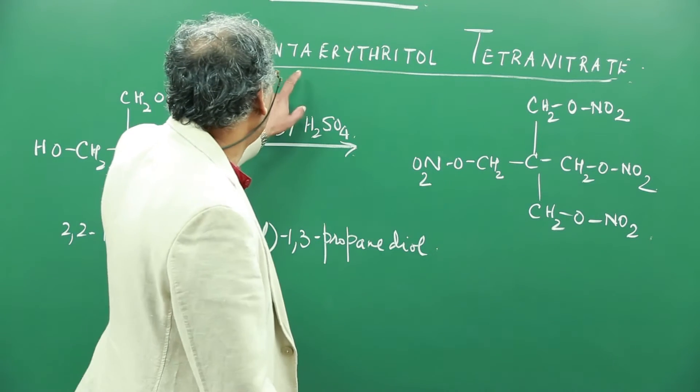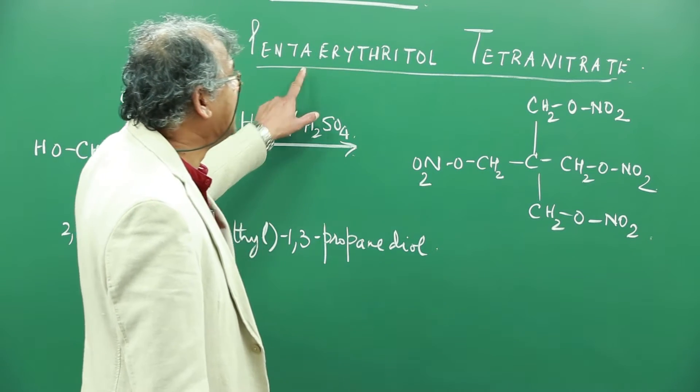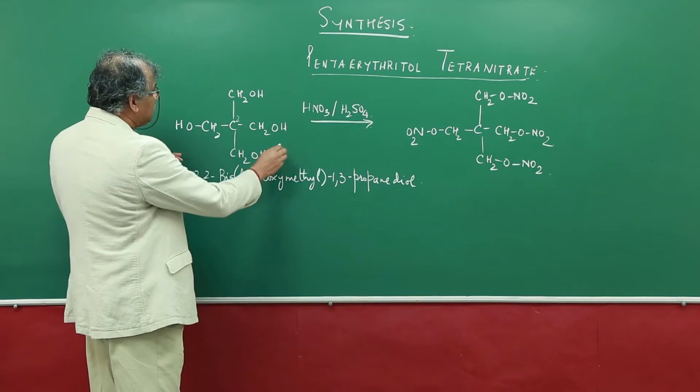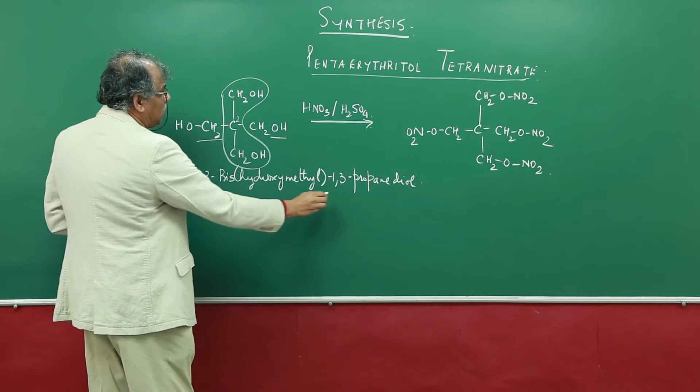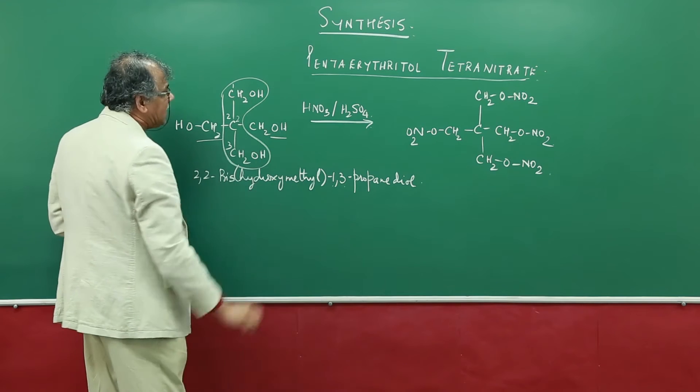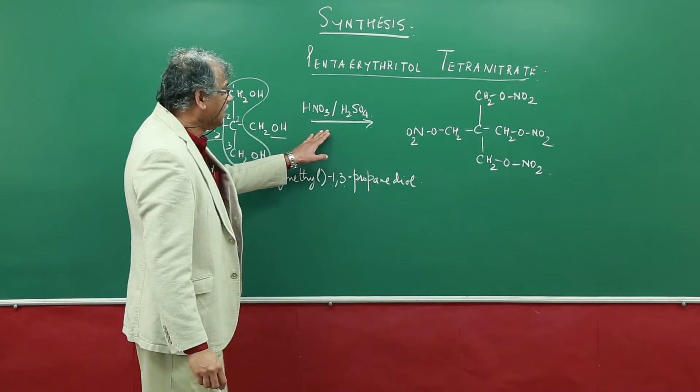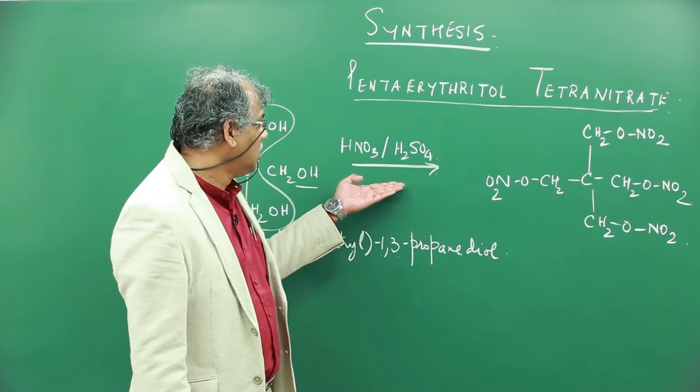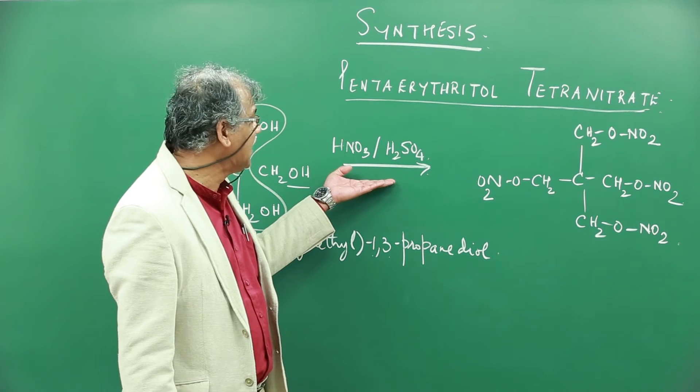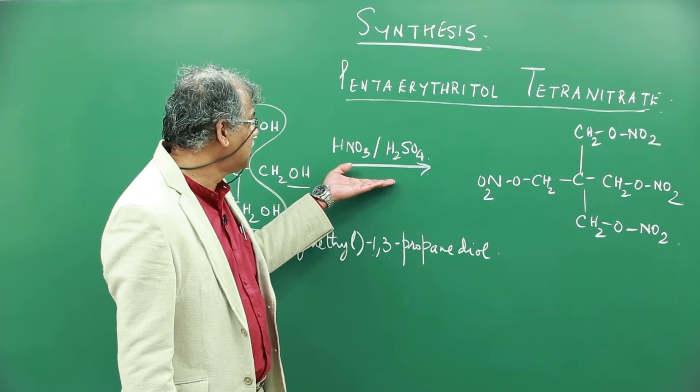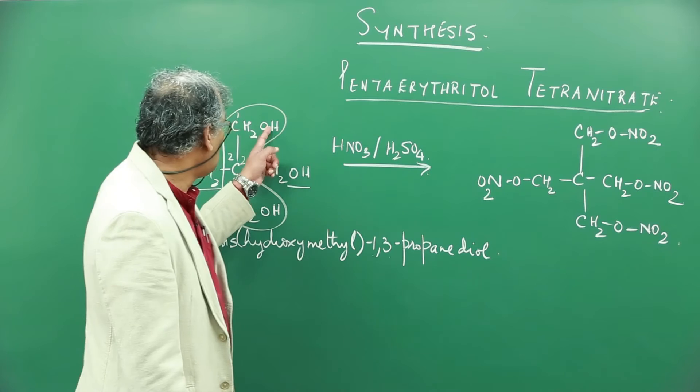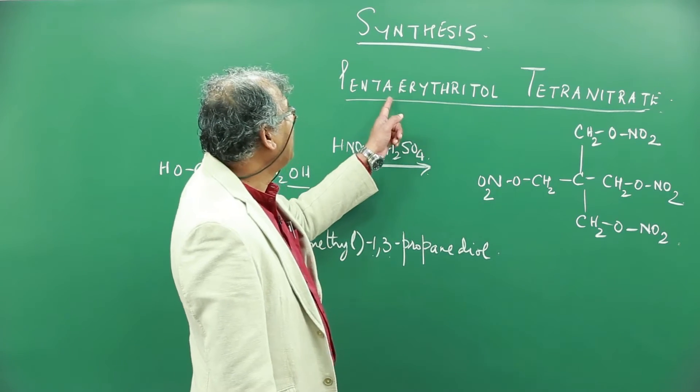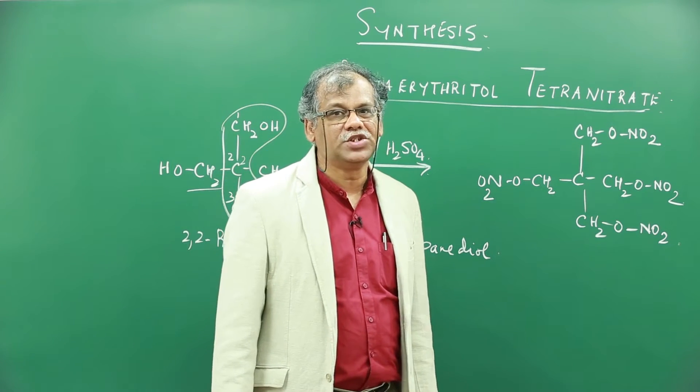Our second molecule is pentaerythritol tetranitrate. So we start with 2,2-bis-hydroxymethyl-1,3-propane-diol. And like for nitroglycerin, we adopt similar conditions: a nitrating mixture composed of nitric acid and sulfuric acid, and all the four hydroxy groups are nitrated to give pentaerythritol tetranitrate.